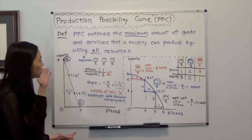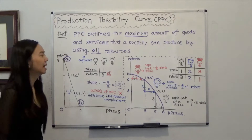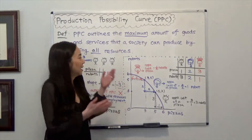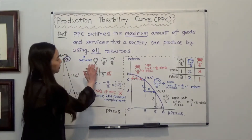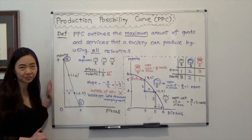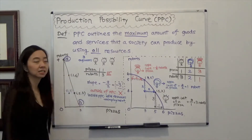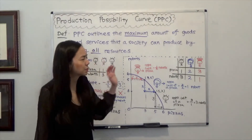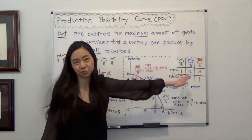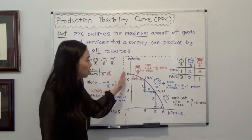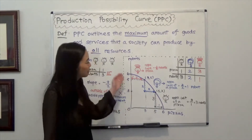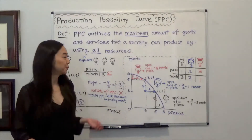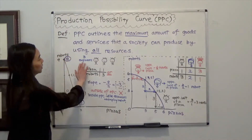You often see the Production Possibility Curve as sometimes a straight line and sometimes a bow shape. In this clip, I'm going to explain why. Bottom line: if you have a society with the same kind of labor or same kind of resource, you see a straight PPC. If you have a society with more diversity and different kinds of workers, your Production Possibility Curve will be bow-shaped.